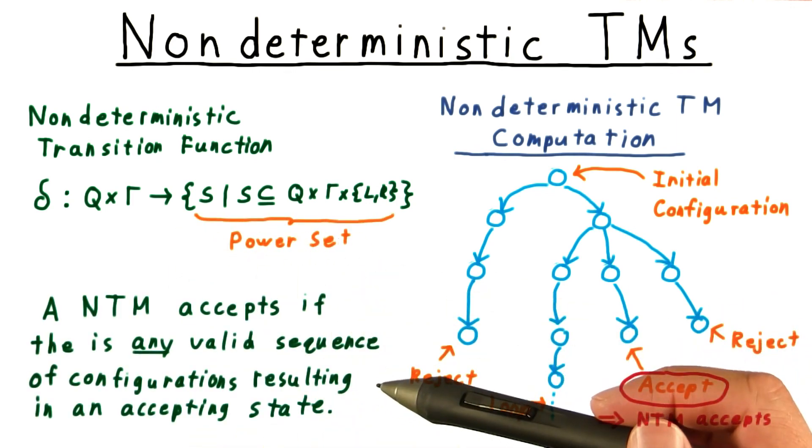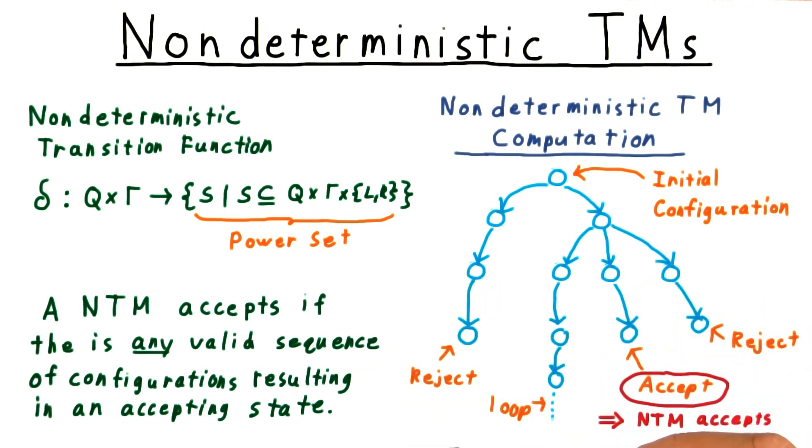The only other change we need to make is when the machine accepts. It accepts if there is any valid sequence of configurations that results in an accepting state.